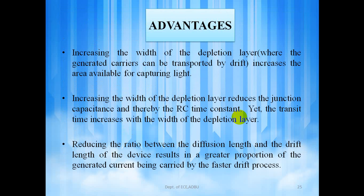Advantages of PIN photodiode are increasing the width of the depletion layer increases the area available for capturing light. Increasing the width of the depletion layer reduces the junction capacitance and thereby the RC time constant, yet the transit time increases with the width of the depletion layer. Reducing the ratio between the depletion length and the drift length of the device results in a greater proportion of the generated current being carried by the faster drift process.